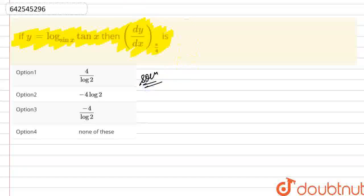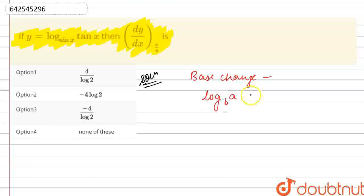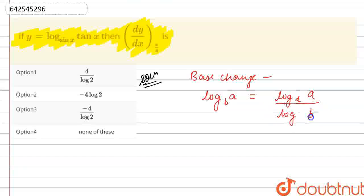What I'll use here is the base change theorem. This states that if we have log a with base b, we can write this as log a with some another base d, divided by log b with the same base d.